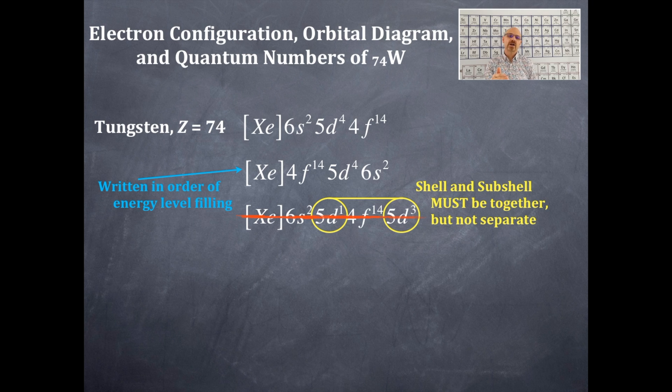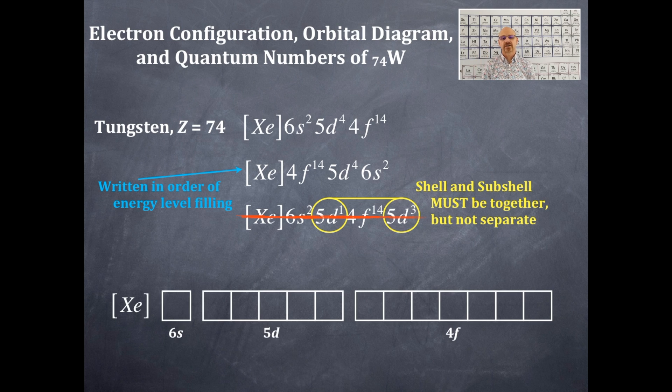Now that you got the electron configuration, we're going to get the orbital box diagram and valence electrons. I'm following the first one that we did for tungsten. You could do the orbital box diagram using the energy level filling and that is perfectly fine too.